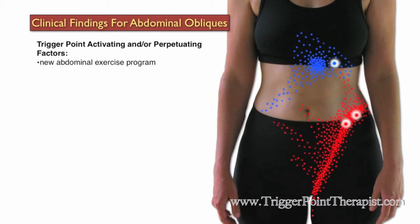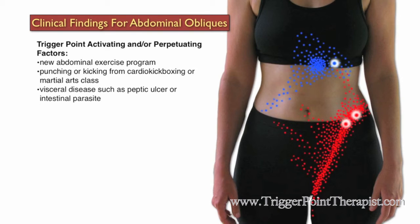Here are some activating and reactivating factors for abdominal oblique trigger points. Clients that start a new abdominal exercise program will usually activate these trigger points. Punching or kicking from a cardio kickboxing or martial arts class will often do that as well.